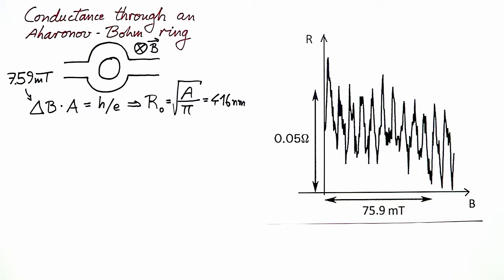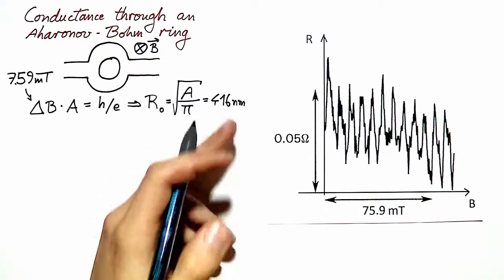This value can be compared to what is reported by the authors of this research, who have measured the radius of the ring using a scanning transmission electron microscope and find a mean lithographic radius of 412 nanometers, which is very close to this value.